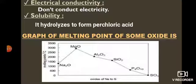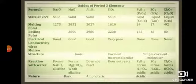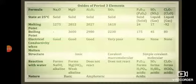Looking at the graph of melting points: sodium oxide has a lower melting point than magnesium oxide because magnesium oxide has greater electrostatic forces due to the double positive charge. Then comes aluminium oxide and silicon dioxide with even higher melting points. For phosphorus, sulphur, and chlorine oxides, the melting point decreases further because these are molecular oxides with weak intermolecular forces. A summary table of all properties — physical state, melting/boiling point, electrical conductivity, solubility, and nature — is provided.